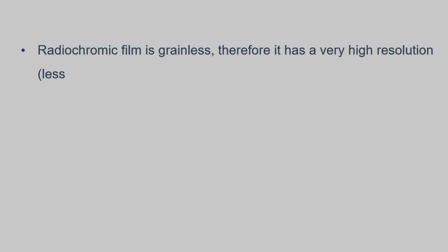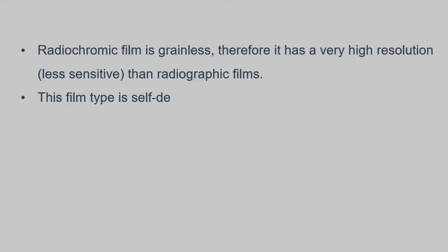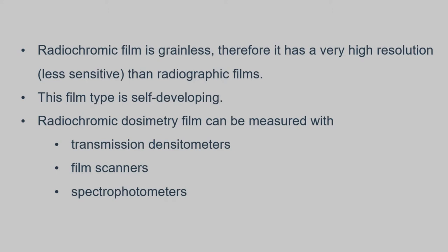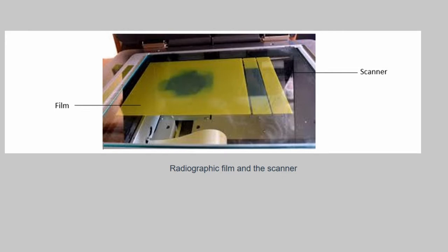Radiochromic film is screenless, therefore it has very high resolution compared to radiographic film. This film is self-developing, so it does not require developer nor fixer. Radiochromic dosimetry film can be measured using a transmission densitometer, film scanner, and spectrophotometer. This image shows the radiographic film and the scanner. The blue-greenish part is the exposed part of the film.